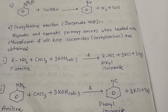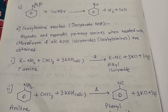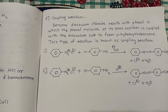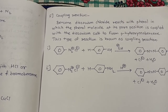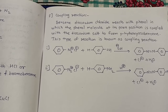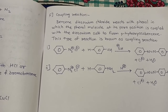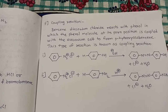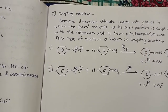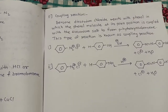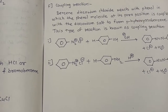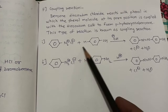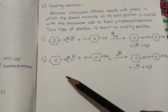Cyanide is an ambidentate ligand — CN is cyanide and NC is isocyanide. Now the last reaction is the coupling reaction. Benzene diazonium chloride reacts with phenol, where the phenol molecule at its para position couples with the diazonium salt to form para-hydroxy azo benzene. Unlike Sandmeyer and Gattermann reactions, in coupling reaction the N₂⁺ of the diazonium salt is not eliminated.